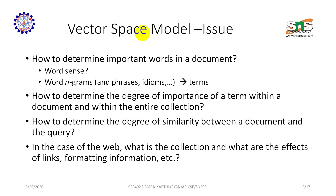Vector space model issues: How to determine important words in a document — word counts, word n-grams, and phrase index terms. How to define the degree of importance of a term within a document and within an entire collection. How to determine the degree of similarity between a document and a query. In the case of the web, what is the collection and what are the effects of link and formatting information?